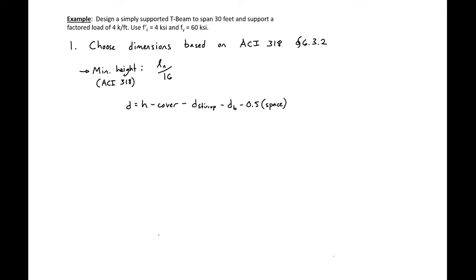In this example we will be designing a simply supported T-beam to span 30 feet and support a factored load of four kips per foot. We're going to use F'c, our concrete strength of 4 ksi, and our yield strength of our steel 60 ksi. This is going to be an isolated T-beam, independent of any kind of one-way slab or two-way slab system. The first thing we're going to do is choose the dimensions for our section based on our ACI 318 limits.